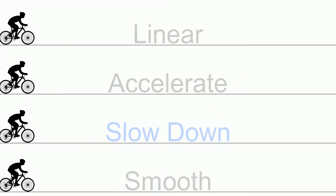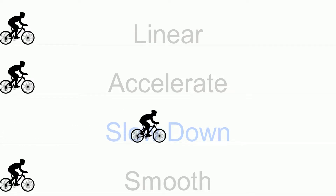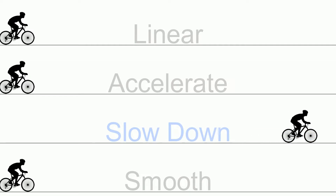Let's complete the four speeds by looking at Slow Down. This is the opposite of Accelerate and would be a great choice for any image, object or text that starts its animation off screen or may be hidden in a faded transition, but where the animation ends on screen. As we can see, it ends very, very gently.